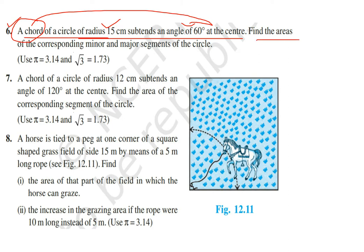We have to find the areas of the corresponding minor and major segments of the circle. The given values are π = 3.14 and √3 = 1.73.